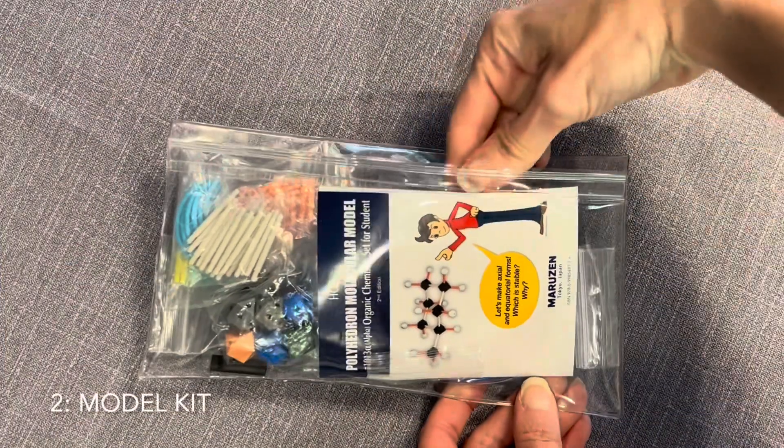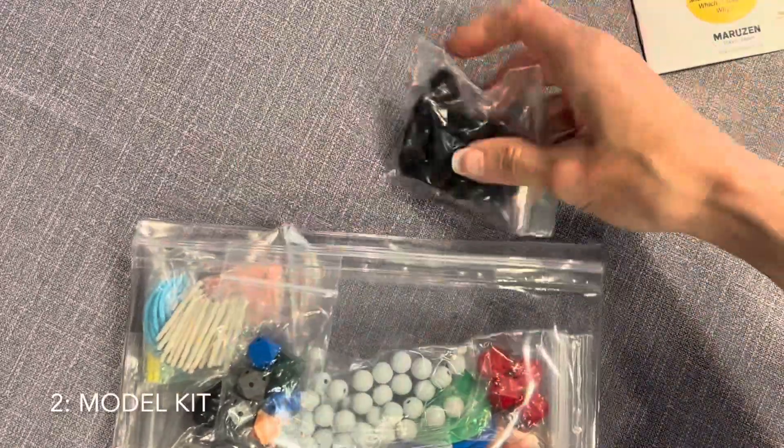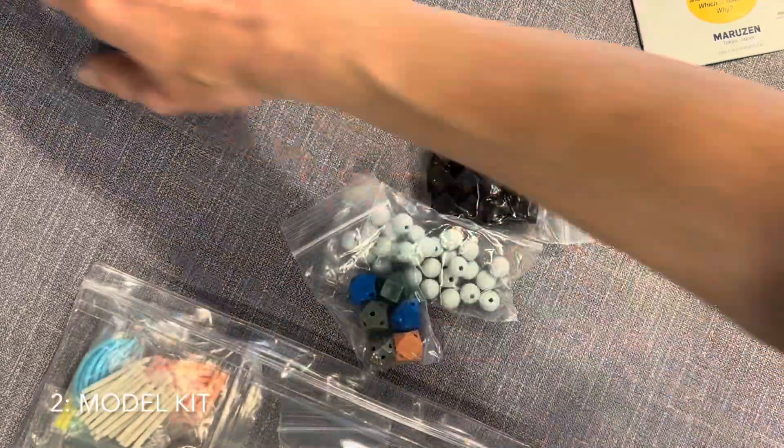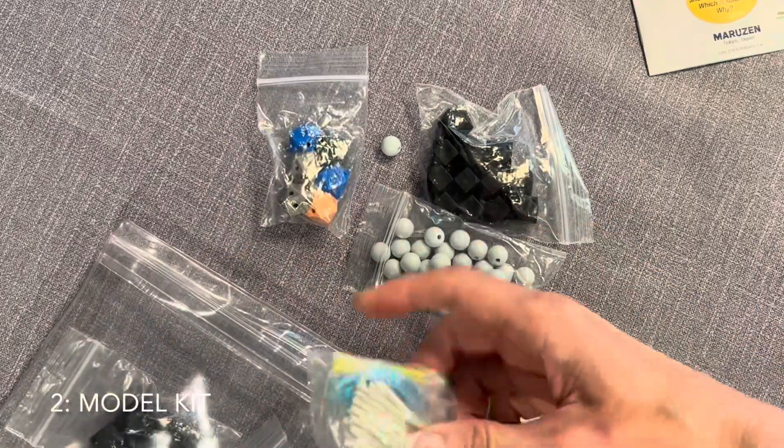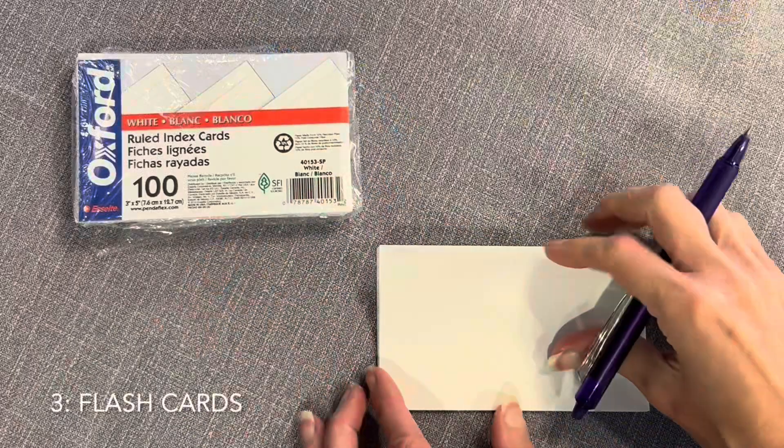Number two, get a model kit. These save you so much time and mental effort, they are well worth your money. If you only buy one thing from my list, it should be your textbook, but if it's not your textbook, this should be it. I have a video breakdown of a couple different model kits that I've posted in the description below. Get one, you won't regret it.